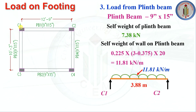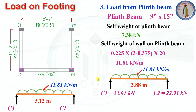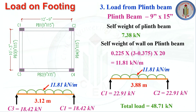For span C1 to C2 (3.88 m), wall load = WL/2 = 11.81 × 3.88 / 2 = 22.91 kN on C1. For span C3 to C1 (3.12 m), wall load = 18.42 kN on C1. Total plinth beam load to C1 = self-weight of plinth beam + 22.91 + 18.42 = 7.38 + 22.91 + 18.42 = 48.71 kN.